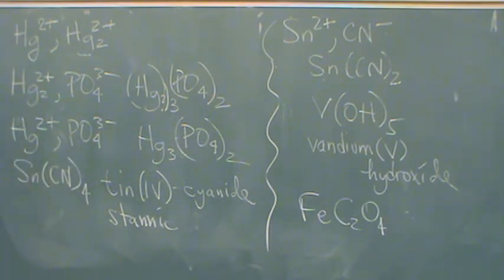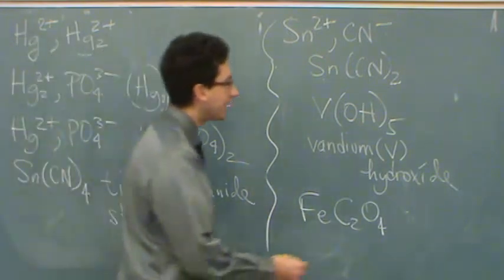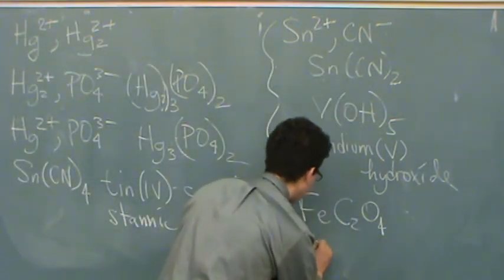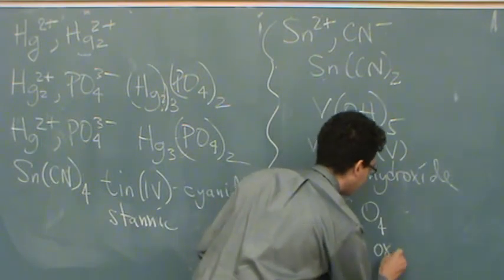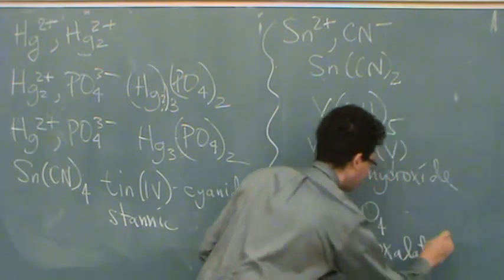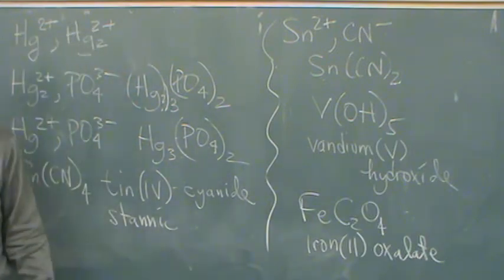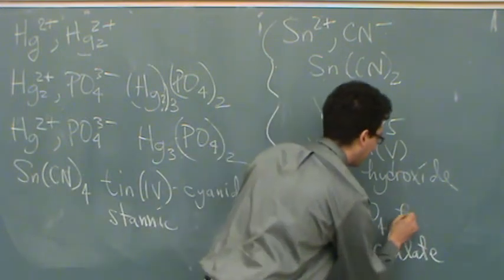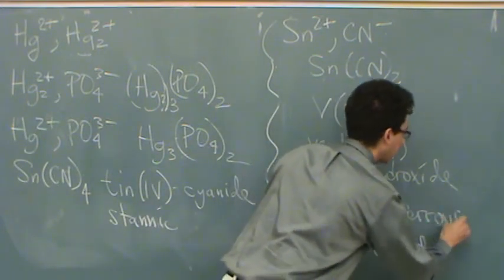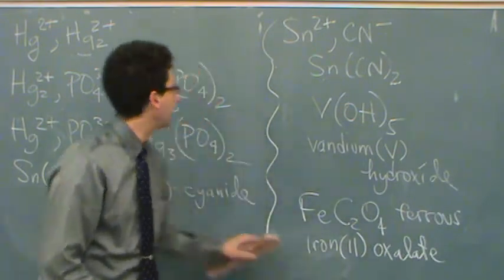Okay, if the iron's two plus, is that the higher or the lower charge? Iron is two and three, so it's a lower charge. So you could either name this iron two oxalate, or what would be the Latin equivalent? Ferrous. The lower one. So I'll just put it here, ferrous oxalate is the other possible way to name it.